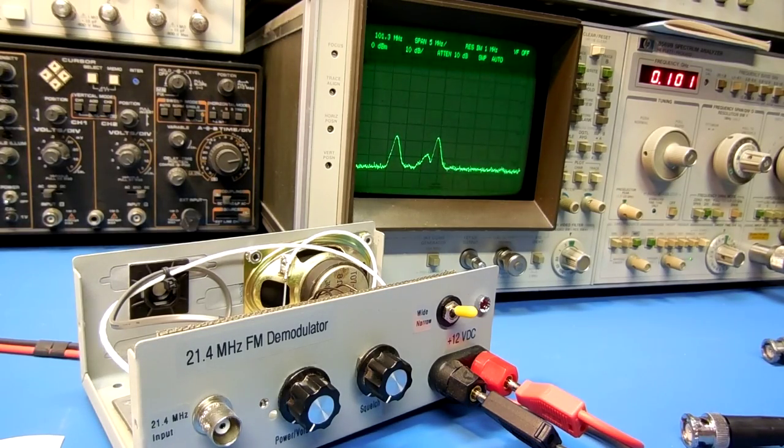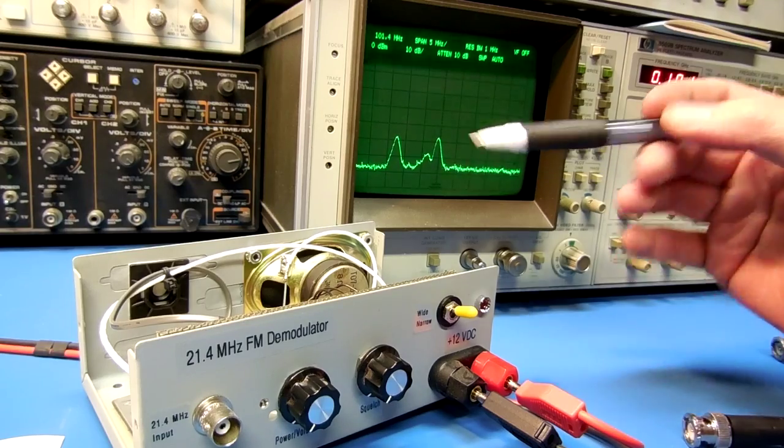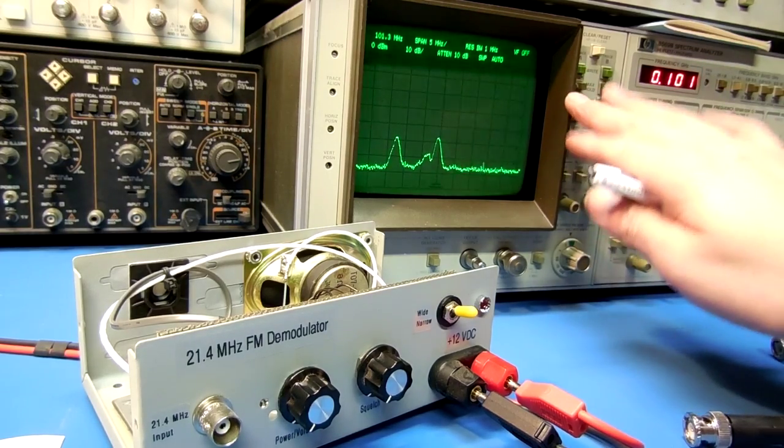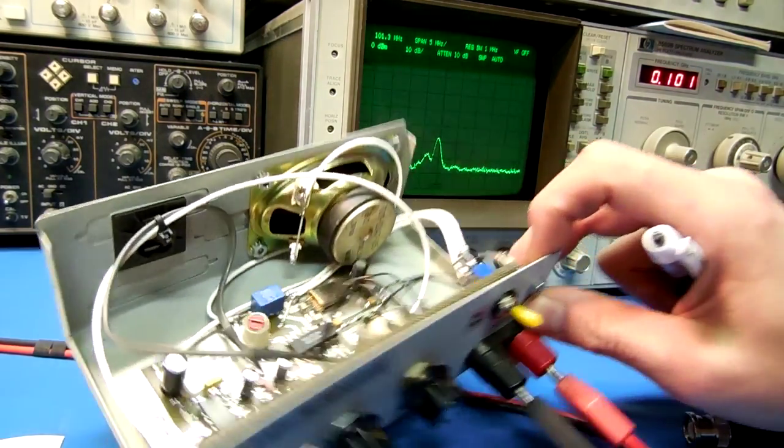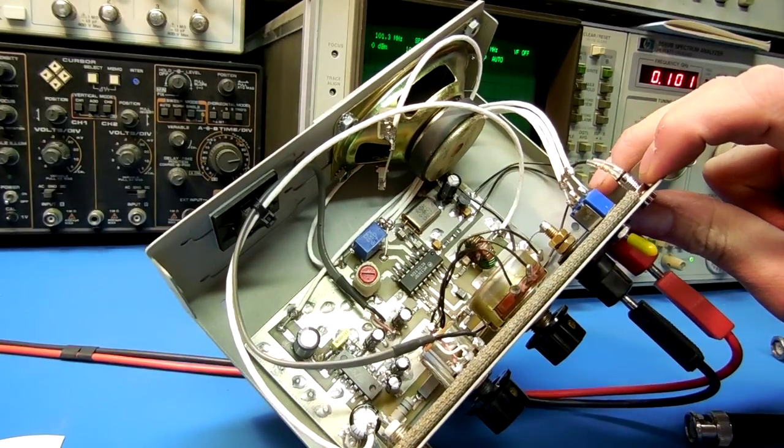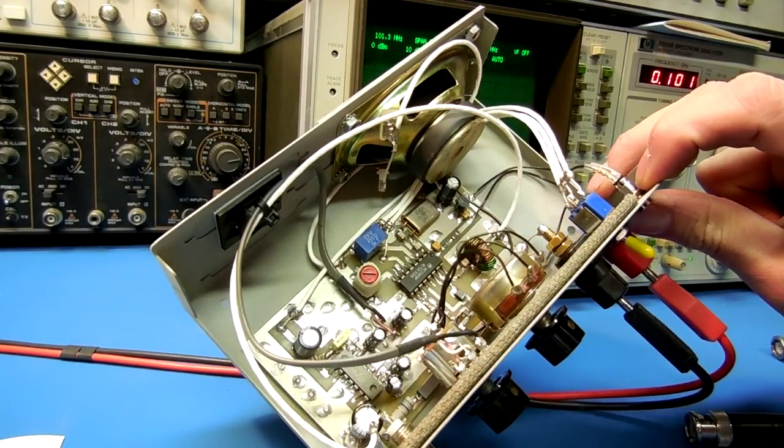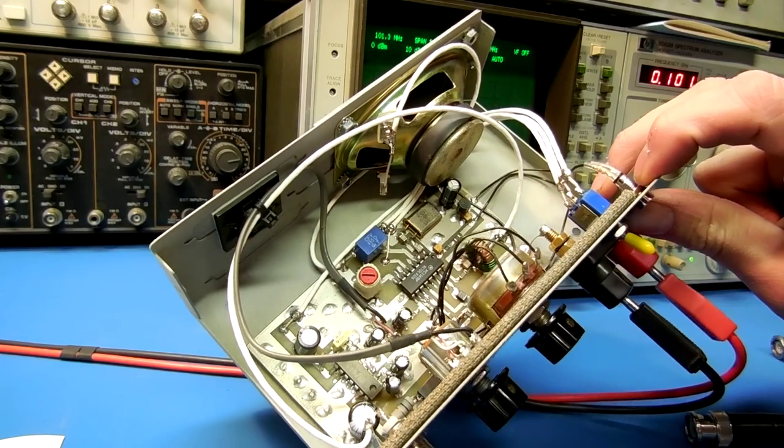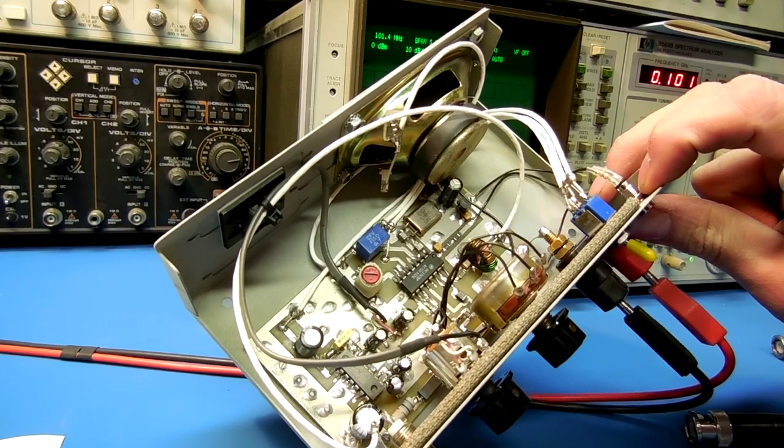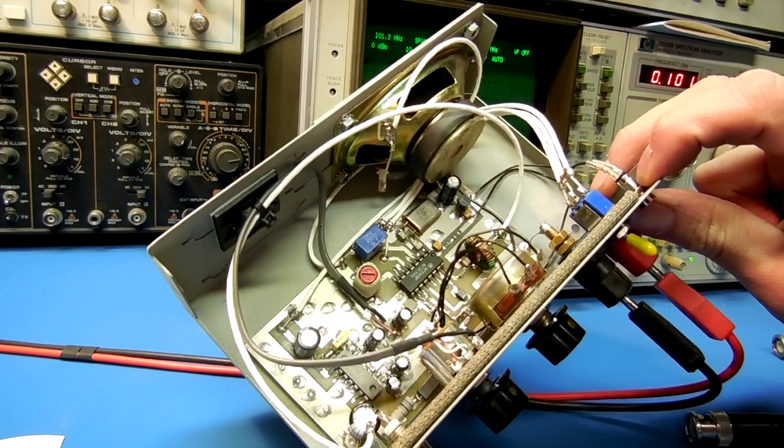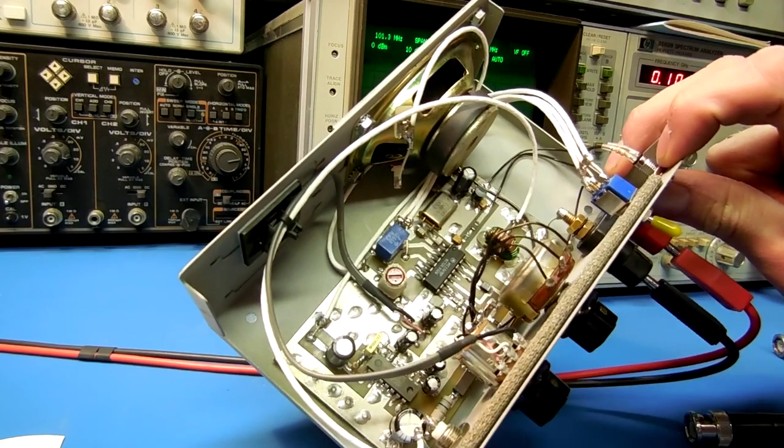Here's how to construct a 21.4 megahertz FM demodulator for a HP spectrum analyzer or any other gear which has a 21.4 megahertz IF output. What this does is take the final IF output from the spectrum analyzer and FM demodulates the signal. This is useful for testing FM receivers or to turn your spectrum analyzer into a receiver essentially.